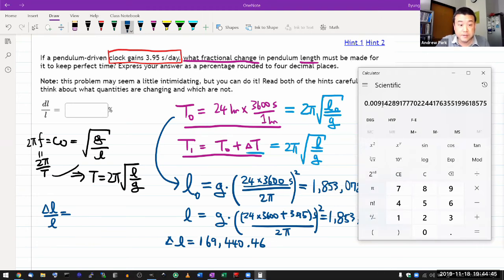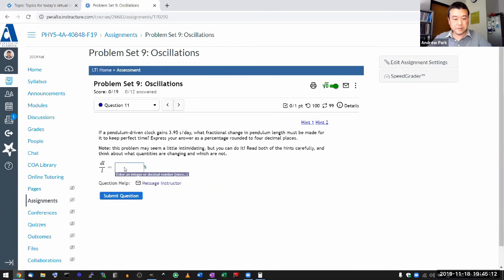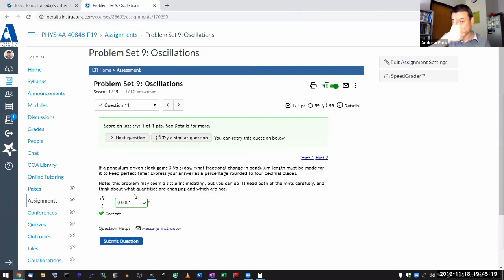So let me write that down. 0.0091%. Plug that in and let's see. So it was 0.0091. Submit the question. Yeah. Okay.